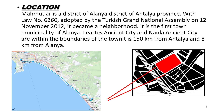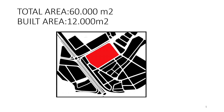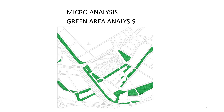Mahmudlar is 8 km from Alanya. Total area is 60,000 square meters, built area is 12,000 square meters. Micro analysis.